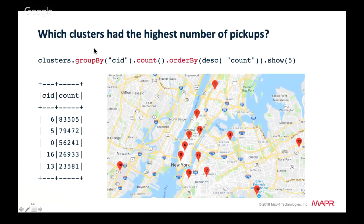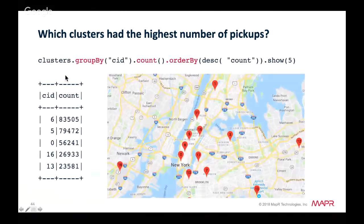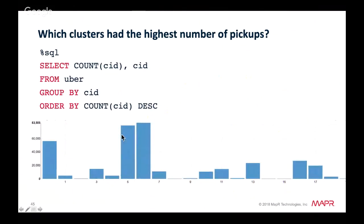To determine which cluster centers have the highest number of pickups, we group by cluster ID, get the count, order by count descending, and show the top five. The top five are clusters 6, 5, 0, 16, and 13 — in the Manhattan area, which makes sense. We can also run the same query using Spark SQL and display it in Zeppelin as a table.